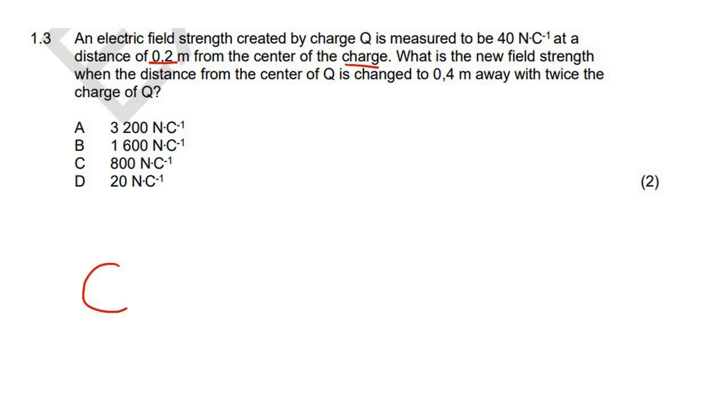So we've got a charge, and that charge is called Q. Now they're saying that the electric field strength at a distance of 0.2 meters - okay, so we've got some random little place, which I'll just call X, and the distance between the charge and this random point is 0.2 meters.